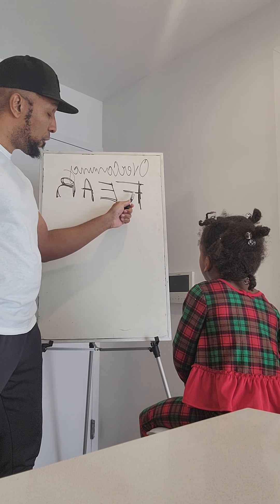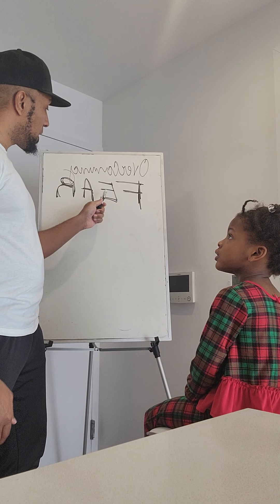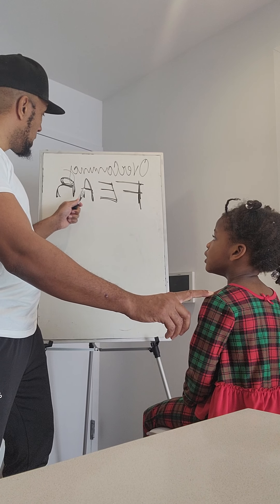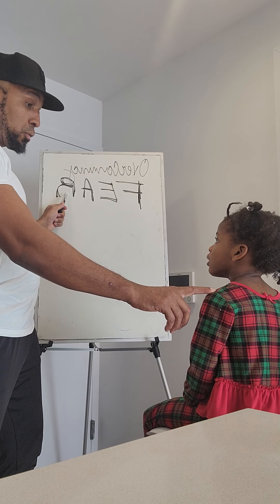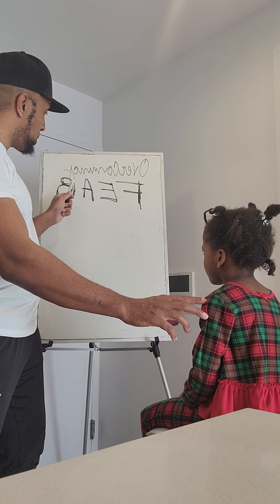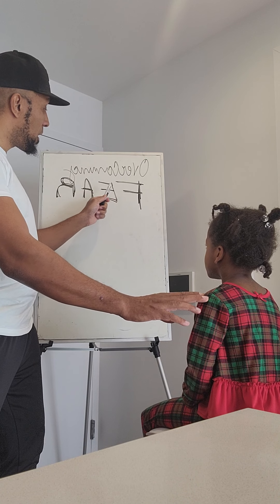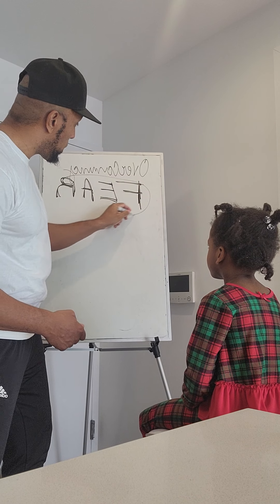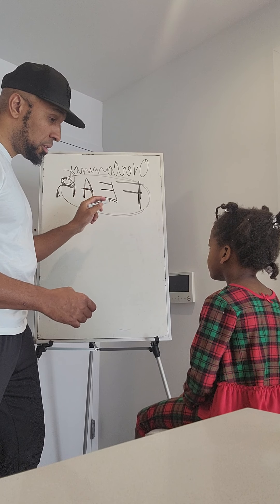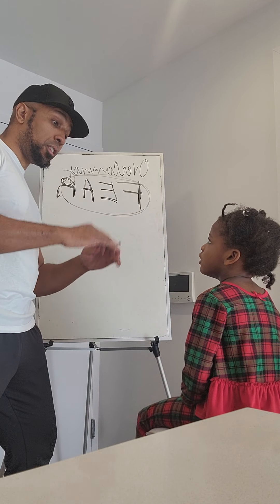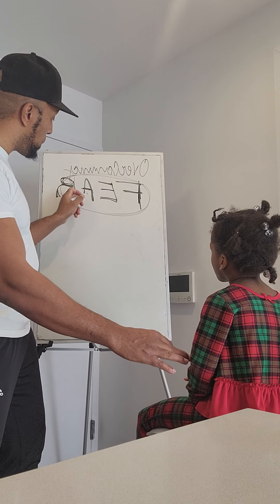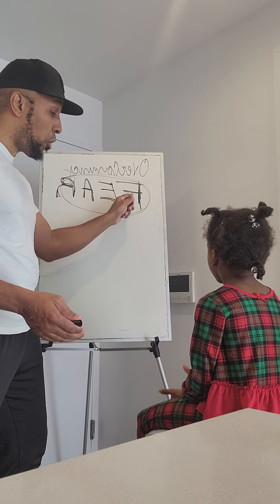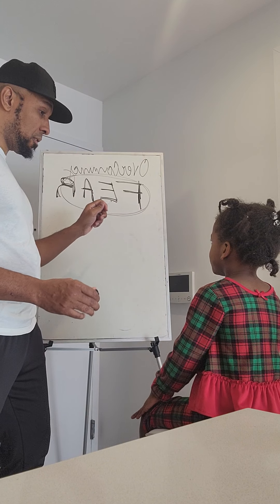Okay, the first letter stands for False. Say false. So false evidence appearing to be real. Say it: false evidence appears to be real. So you see, inside the word fear itself, there's a cheat code that helps you to overcome fear — whatever it is you're fearing. Because fear is false evidence appearing to be real.